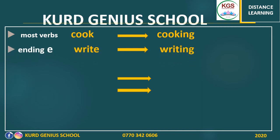Sometimes I have to remove the last letter. When my verb ends in 'e', I remove the 'e' and write -ing. For example: write → writing, without the 'e'.